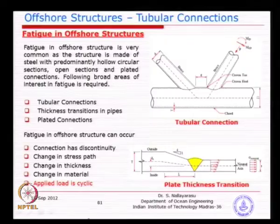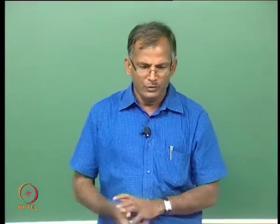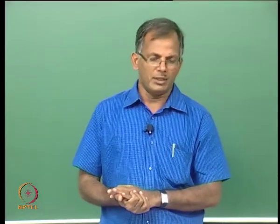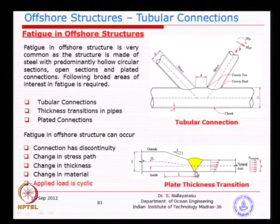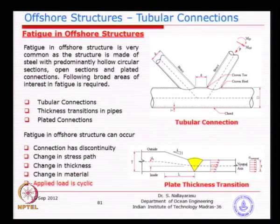A typical K joint — the most problematic points are the saddle and crown points, where the magnitude of stresses is higher. Fatigue will initiate at tubular connections like T, Y, K, and X joints. Thickness transitions are also a potential problem where concentrated stresses occur. Many different types of plate connections, T junctions, and butt junctions are susceptible. For fatigue to occur, there must be a discontinuity in the load path or stress path, a thickness change, and the load must be cyclic.